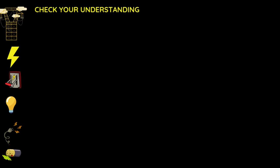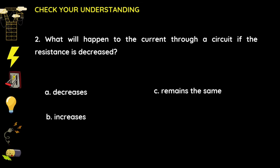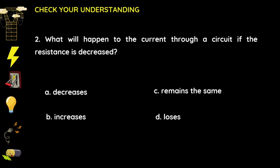Number two: what will happen to the current through a circuit if the resistance is decreased? A) decreases, B) increases, C) remains the same, D) loses. The answer is B, increases — if the resistance is decreased, the current will increase since they are inversely proportional.